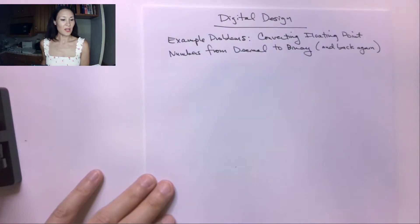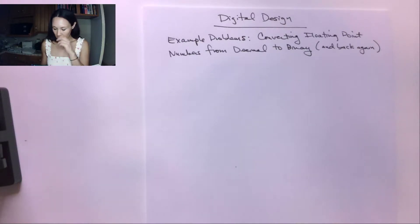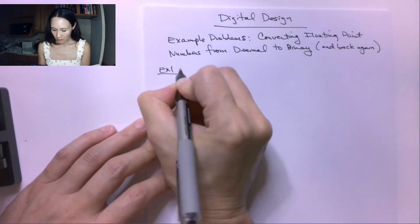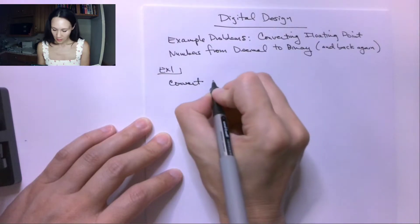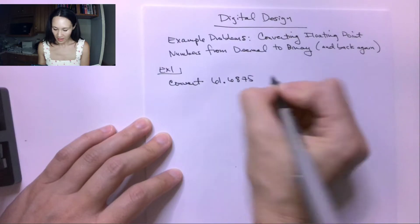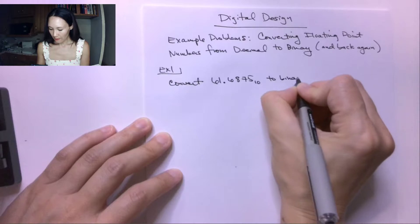Hi students. I made this video so that you could see a couple more examples of converting floating point numbers from decimal to binary, and then also from binary to decimal. Floating point numbers are fractional numbers, so let's convert the floating point number 61.6875 from decimal base 10 to binary.